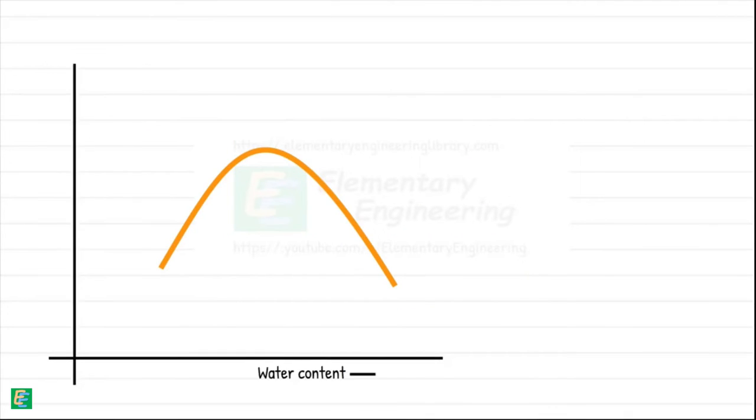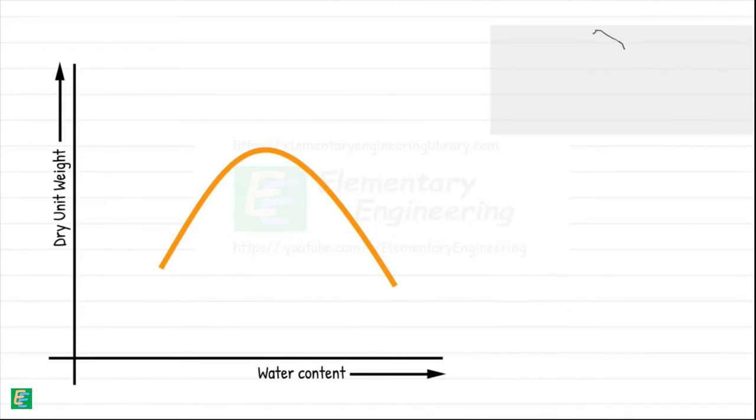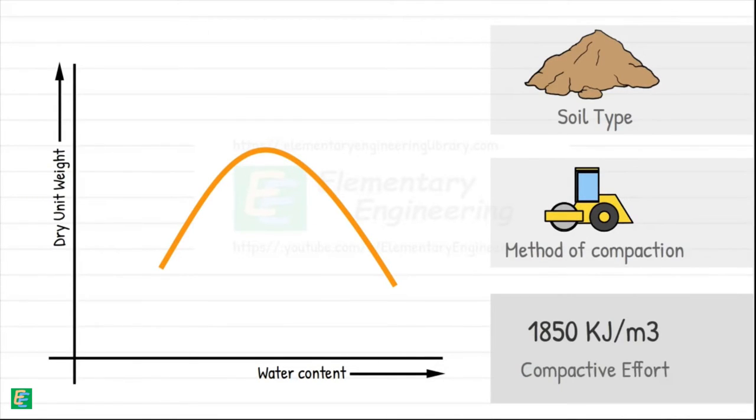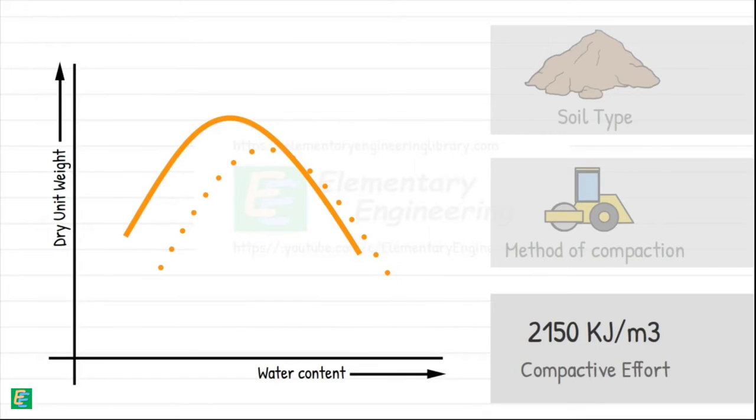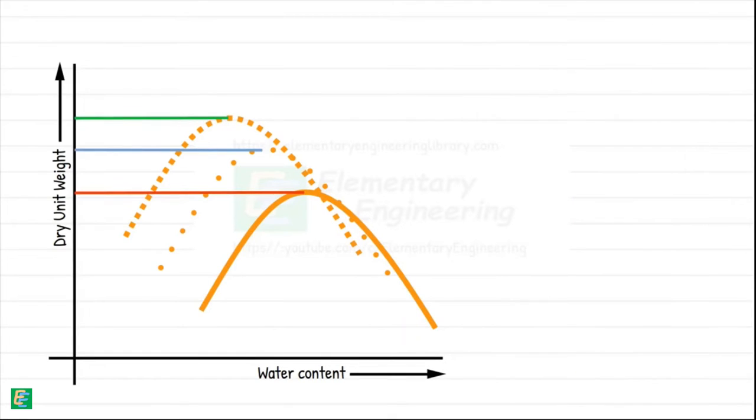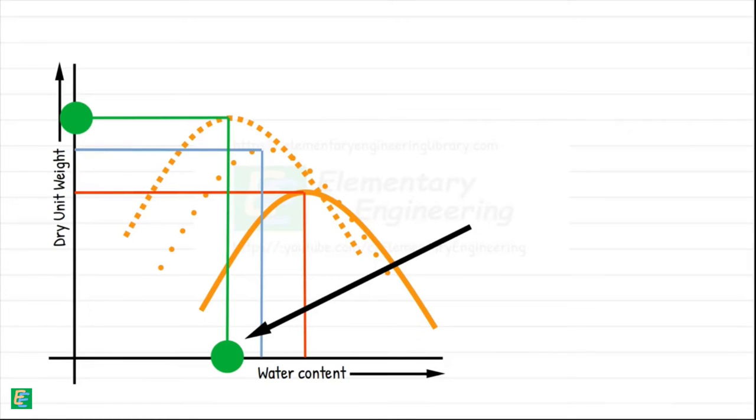The compaction curve received is unique for a given soil type, method of compaction, and compactive effort. If we increase or decrease the compactive efforts, the dry unit weight and hence the compaction of soil will increase or decrease respectively. Higher the compactive effort, higher is the maximum dry unit weight and lower is the optimum moisture content. This means we need less amount of water to compact the soil to help it achieve its maximum dry density.